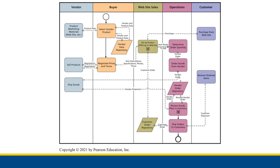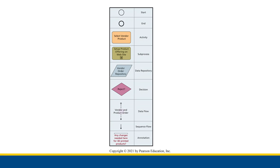Let's take a look at the business process modeling notation symbols. When we have a business process modeled this way, we have symbols that give certain information about pieces of that process. We have two circles: the start circle, which is a thin circle, and the end circle, which is a thick circle. These refer specifically to where the process starts and ends for us — not for the vendor or customer, since they have their own processes. We only care about the start and end of our own process.